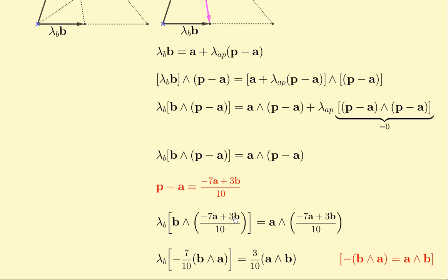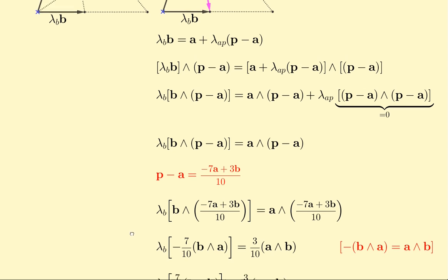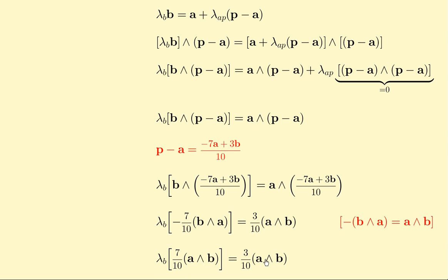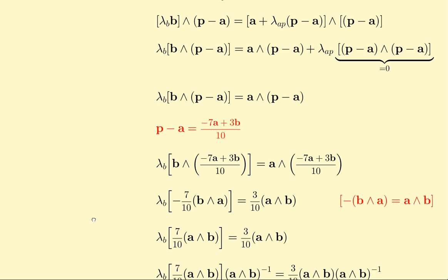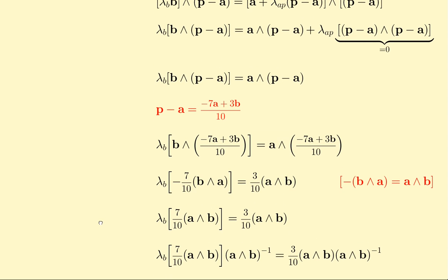If we substitute this expression in this equation, we find B wedged with B is zero, A wedged with A is zero, we come up with this. And now we use the fact that the negative of B wedged A is A wedged B, and we come up with this equation. At this point, we can pretty well see that seven-tenths lambda_B is three-tenths, but to do this properly, what we would do...